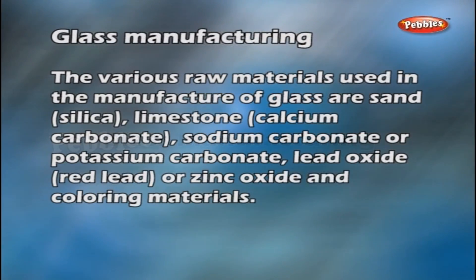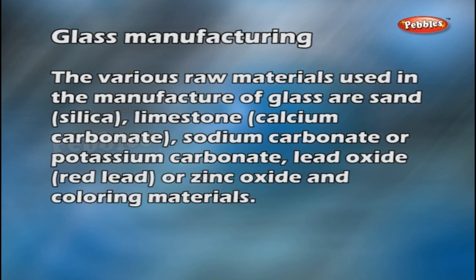Glass manufacturing. Glass and its raw materials. The various raw materials used in the manufacture of glass are sand, silica, limestone, calcium carbonate, sodium carbonate or potassium carbonate, lead oxide, red lead or zinc oxide, and colouring materials.